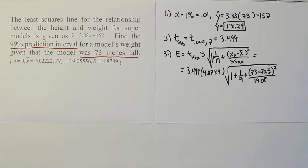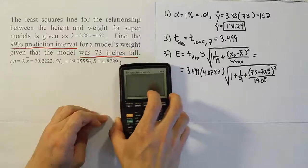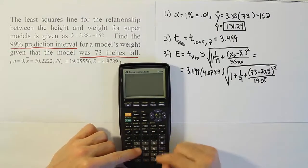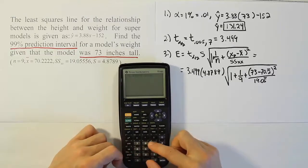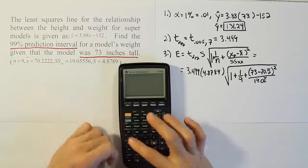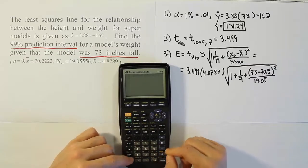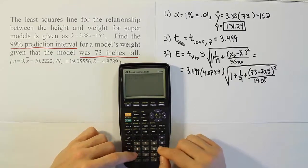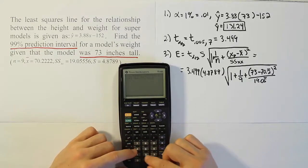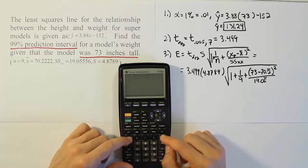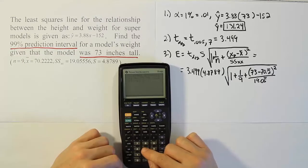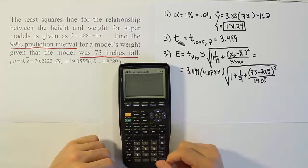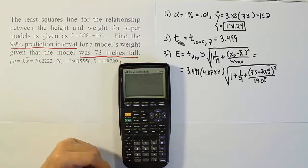Let's plug all in our calculators. So we have 3.499 times 4.8789 times the square root of 1 plus 1 divided by 9 plus parentheses 73 minus 70.22222, close parentheses, squared, divided by 19.055555. Close that up, hit enter, and we get the answer 21.019.